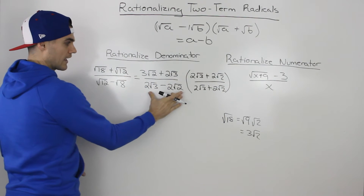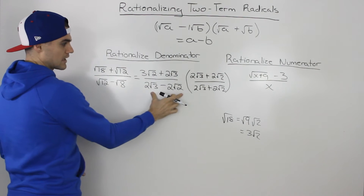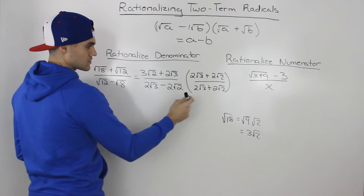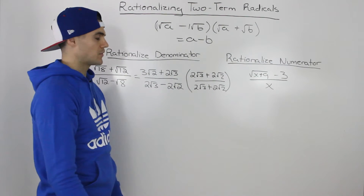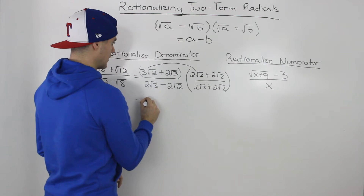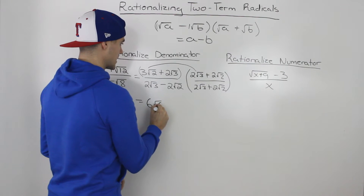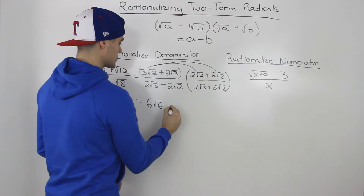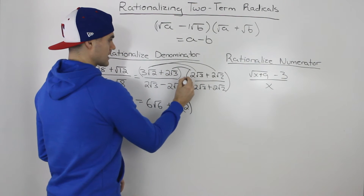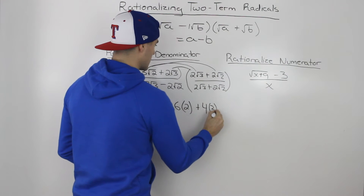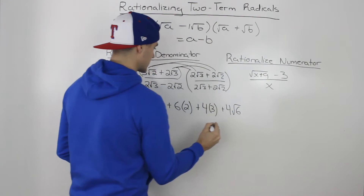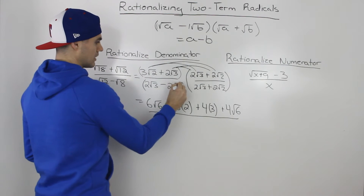So we took this expression, created an equivalent expression by simplifying the radicals, and then multiplied it by the conjugate in both the numerator and denominator — it's like multiplying by 1. Now, when we multiply the numerators, we're going to have to FOIL out these two expressions. So 3 root 2 times 2 root 3 gives us 6 root 6; 3 root 2 times 2 root 2 gives us 6, since root 2 times root 2 is 2. Then 2 root 3 times 2 root 3 gives us 4 times 3, and then 2 root 3 times 2 root 2 gives us 4 root 6.